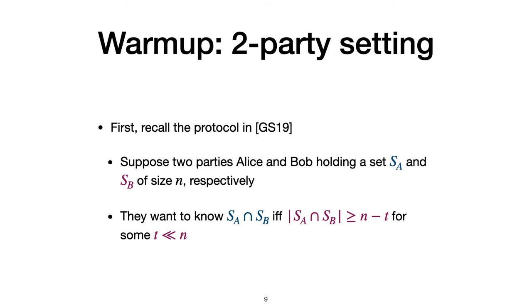Now let's move to the technical part. First, we recall the two-party protocol from GS19. Suppose two parties, Alice and Bob, holding a set SA and SB of size N respectively. Without losing generality, we assume both sets are of the same size. So the problem is they want to know the intersection if and only if the set difference is smaller than some threshold T, where T is much smaller than N.